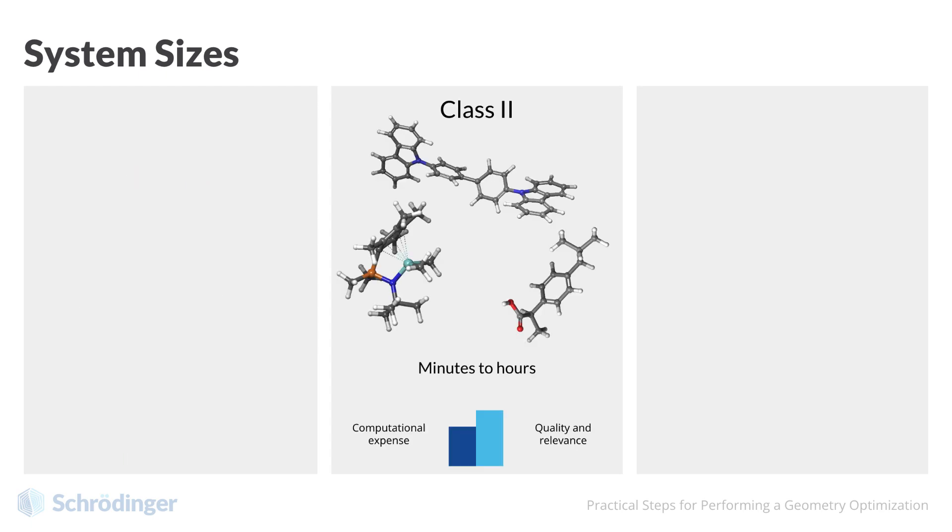For medium-sized molecules, up to roughly 100 atoms, it can take minutes to hours to perform a geometry optimization. Consider, for example, a prototypical organic-electronic device component, a drug-like molecule, or a simple organometallic catalyst or deposition precursor. Despite somewhat greater computational expense, with care, the results can be high quality.